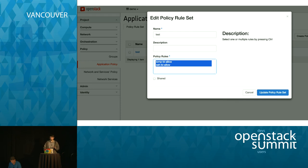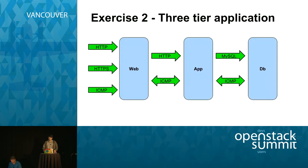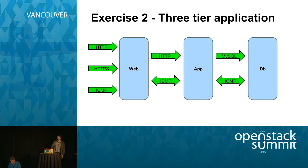Let's make it much harder now - or maybe it's just as easy. We want to create a three-tier application. We will have a web tier that provides HTTP, HTTPS, and ICMP. Then an application tier providing HTTP and ICMP. And then a database tier providing SQL connections.